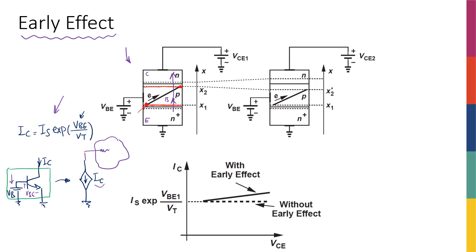What happens in reality is that when I increase VCE, the collector-emitter voltage — say from 1 volt to 2 volts — my base-collector voltage goes deeper into reverse bias. The base was at 0.7 V and the collector at 1 V, so the P-N junction at the base-collector was reverse biased. If you remember from diode discussions, when you further reverse bias a P-N junction, the depletion region becomes wider and wider. So if I make the collector voltage 2 V without changing the base voltage, I go deeper into reverse bias and the depletion region widens.